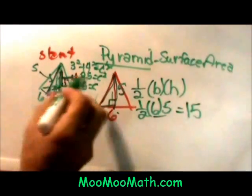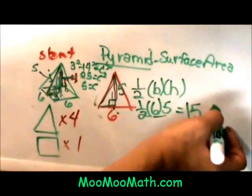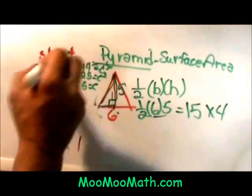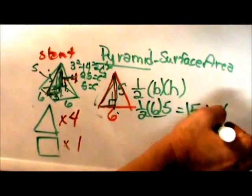Now remember I have four of these triangles, don't I? One on each side of the pyramid. So I am going to multiply that by four. So the surface area of just the sides, which is called the lateral area, is sixty square units.